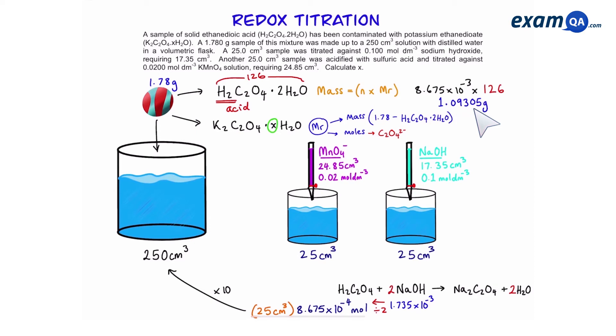So this is basically the mass of ethane dioic acid in that 1.78 grams. We can throw it into this little equation to work out the mass of potassium ethane dioate. So once we do 1.78 take away 1.09305 that gives us 0.68695 grams. So we've got the mass of potassium ethane dioate.